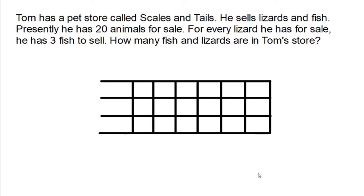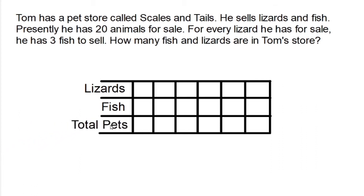A table is simply rows and columns. In this particular table, we're going to need three rows. We're going to need one row to keep track of how many lizards he has. We'll keep another row to keep track of how many fish he has. And in our third row, we'll keep track of the total pets. It says he has three fish for every lizard, so let's figure this out.